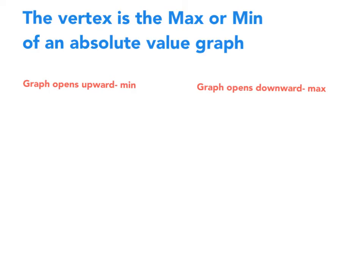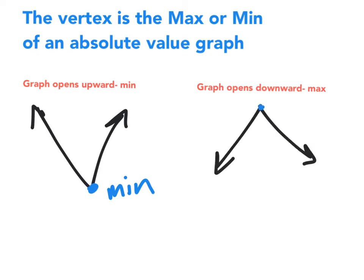Now the vertex is the max or min of an absolute value graph. If a graph opens upward, this vertex is a minimum. Or if the graph opens down, this vertex is a max.